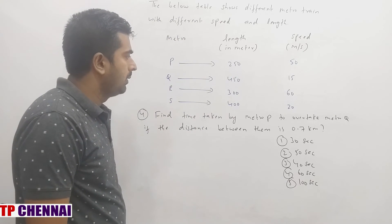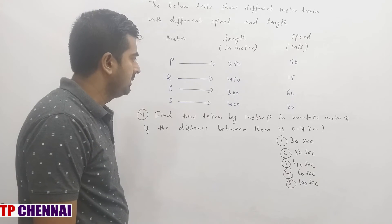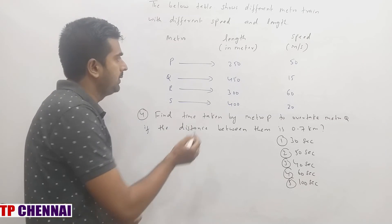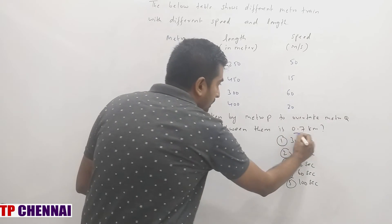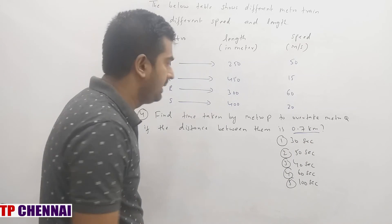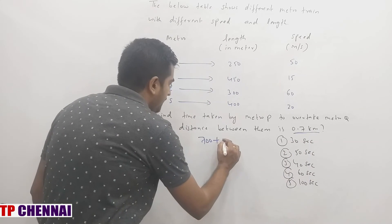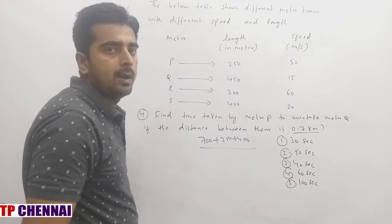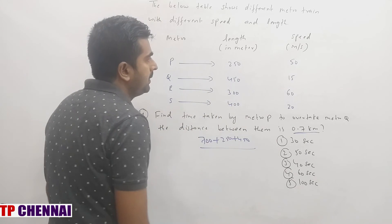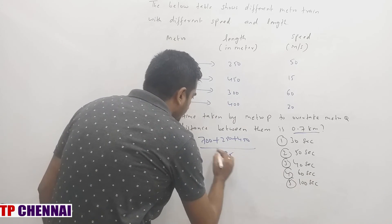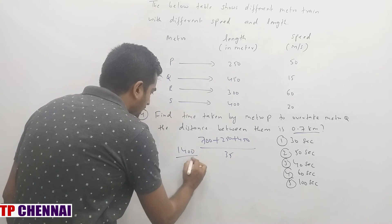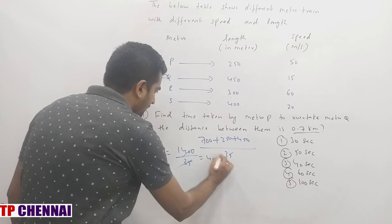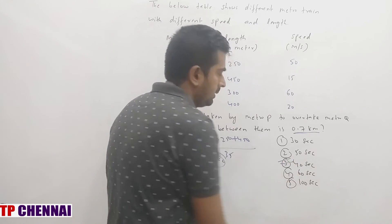Fourth DI question: Find the time taken by metro P to overtake metro Q with the initial distance between P and Q being 0.7 km. Total distance = length of P + length of Q + gap = 250 + 450 + 700 = 1400 meters. Since overtaking means same direction, relative speed = 50 − 15 = 35 m/s. Time = 1400/35 = 40 seconds, which is the third option.